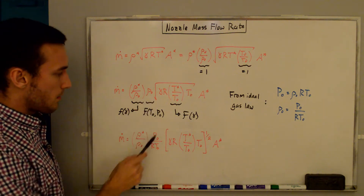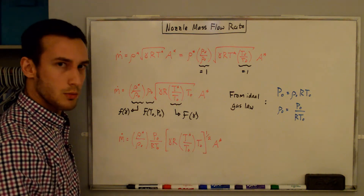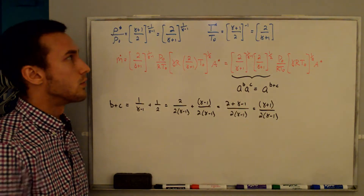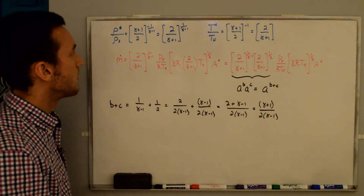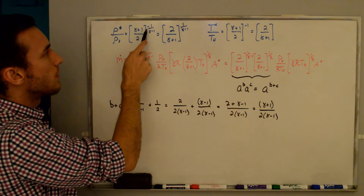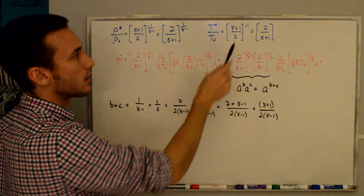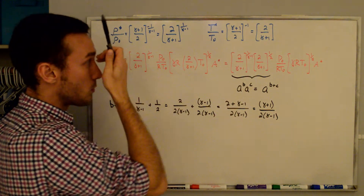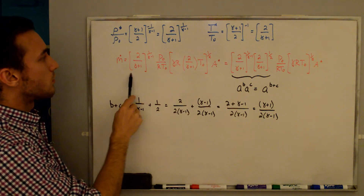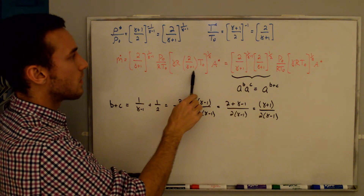Substituting, we get ṁ = (ρ*/ρ₀) × (P₀/RT₀) × (γ R T₀)^(1/2) × A*. Now we plug in the sonic state expressions: ρ*/ρ₀ = (2/(γ+1))^(1/(γ−1)) and T*/T₀ = 2/(γ+1). We separate out ρ*/ρ₀ and (T*/T₀)^(1/2) from the square root term, keeping the exponents explicit so we can combine them in the next step.